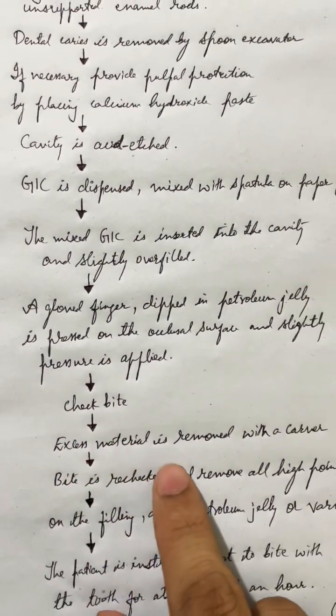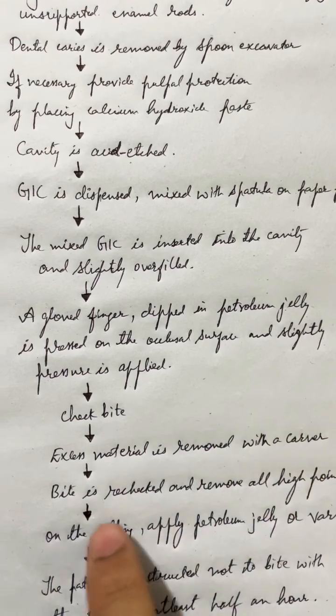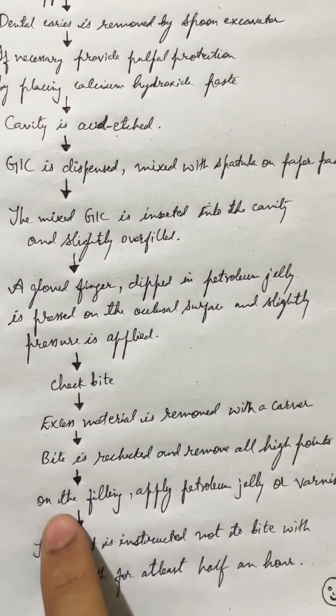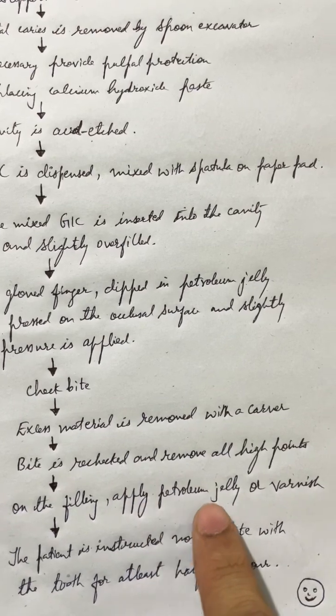Check the bite. Excessive material is removed with a carver. Bite is rechecked and all high points are removed. On the filling, apply petroleum jelly or varnish.